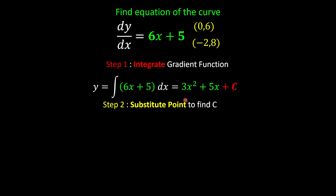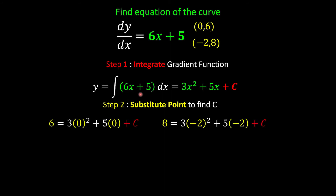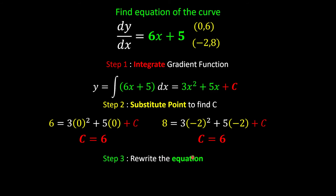To eliminate c, we substitute one of the given points. Either point (0, 6) or (negative 2, at) will work — both give c equals 6. Rewriting the equation with c equals 6, the final equation of the curve is y equals 3x squared plus 5x plus 6. We are done.